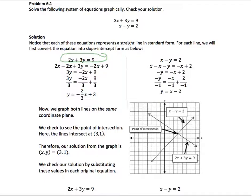We subtract 2x from both sides and divide both sides by 3 to isolate y. Now the equation is in slope-intercept form. The slope is negative 2 over 3 and the y-intercept is 3.